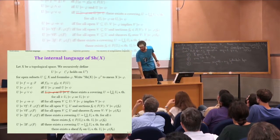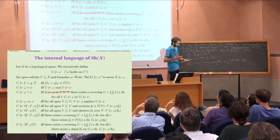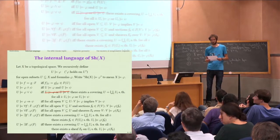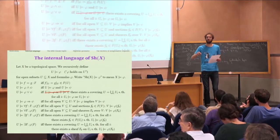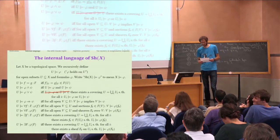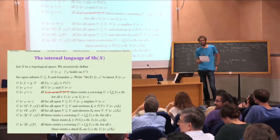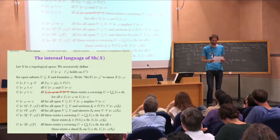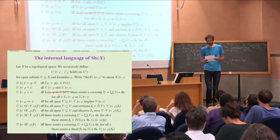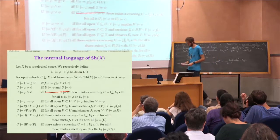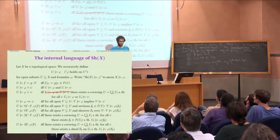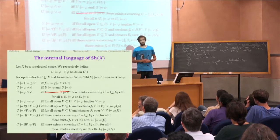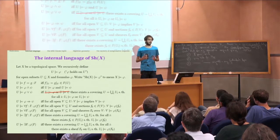I should mention that Mike Shulman was not the first to extend the internal language to unbounded quantification. There was prior work by Andrew Pitts in his seminal 1987 paper 'Polymorphism is Set Theoretic Constructively,' where in section 3 he already had the general idea. And then there's a 2014 paper by Awodey, Butz, Simpson, and Streicher called 'Relating First Order Set Theories, Toposes and Categories of Classes.' This was published after Mike's paper but they worked independently. Mike's paper is called 'Stack Semantics and Comparison of Material Set Theories,' and you do not need any knowledge of stacks in algebraic geometry in order to enjoy it.